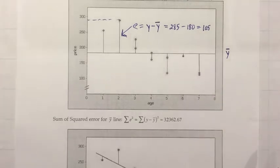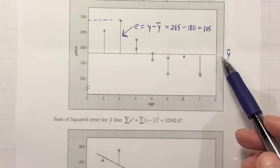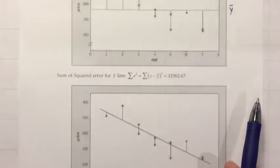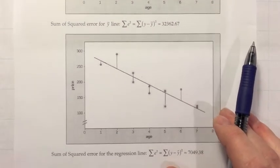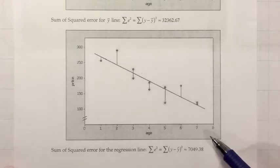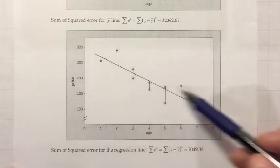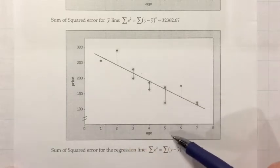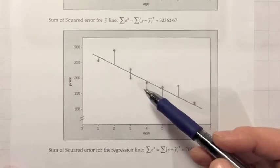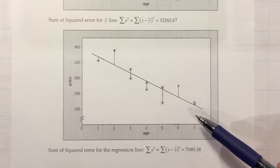That sum of squared errors is just a number representing one way we can make predictions: always predict the average price regardless of car age. The regression idea says it might be better to account for the fact that older cars tend to cost less, and come up with a regression line. Instead of always guessing the average price regardless of age, we plug the age into the regression equation so that for younger cars we guess higher and for older cars we guess lower — and we should do better.